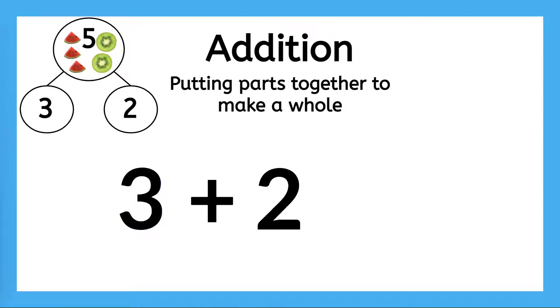The other symbol we use is called an equals sign. It tells us what those parts are equal to, or the same as. We know our parts three and two put together have the same value as the whole, five, so we can use five to finish this addition sentence. Now, this says three plus two equals five.